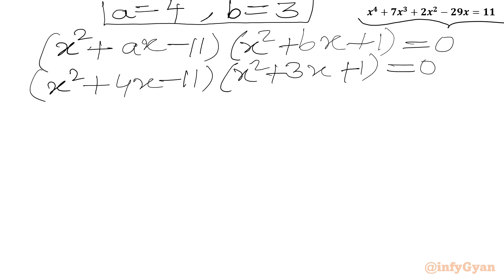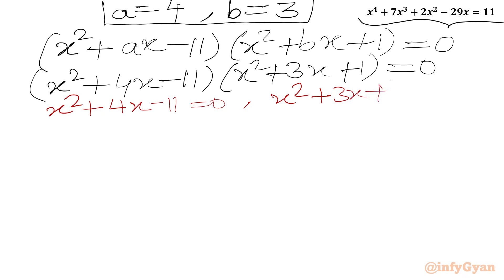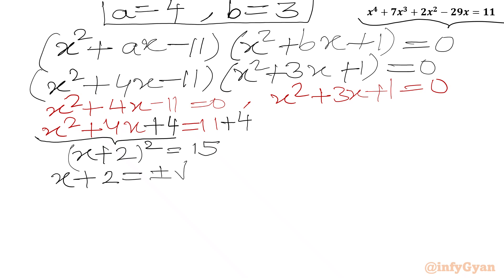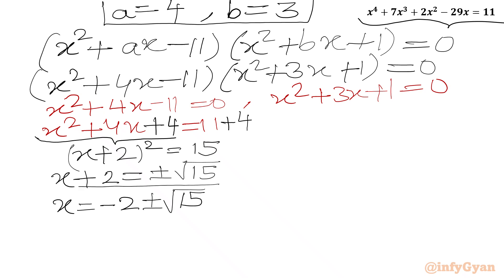Now we will use the zero product rule. Either x² + 4x - 11 = 0 or x² + 3x + 1 = 0. For the first equation, x² + 4x = 11. Adding 4 to both sides gives (x + 2)² = 15. Taking the square root of both sides: x + 2 = ±√15, so x = -2 ± √15. These are the first two real solutions.